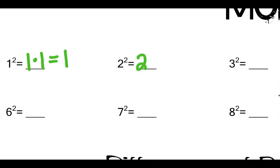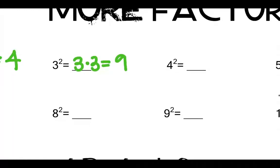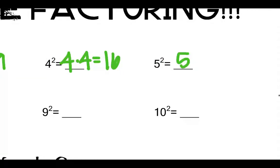So some squares we have: 1 squared is 1 times 1, which gives us 1. 2 squared — 2 times 2 gives me 4. Remember when we did exponent rules, we've got a base and a power, so you take the base 2 times — so 3 times 3 gives me 9. It is not 3 times 2, that is not what's happening. You take the base however many times the exponent says. So 3 two times gives me 9. 4 times 4 gives me 16.